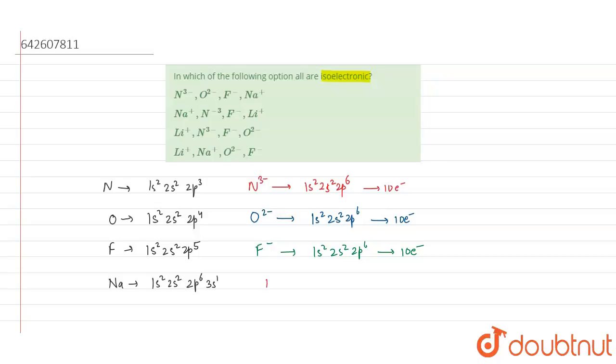So for sodium plus, Na⁺, one electron will be removed. So the electronic configuration will be 1s² 2s² 2p⁶.